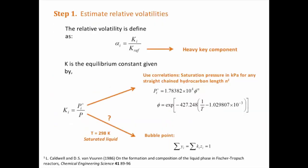The first step is to estimate the relative volatility of the components in the mixture. The relative volatility is defined as the ratio between the equilibrium constant K of a product I and the equilibrium constant of the heavy key component. The equilibrium constant is defined as the ratio between the partial pressure of the component I and the total pressure.